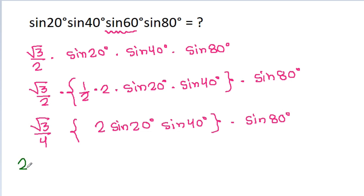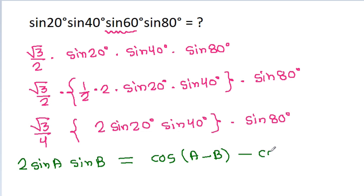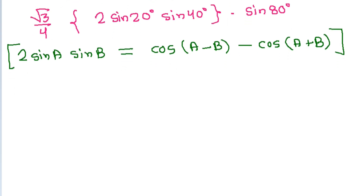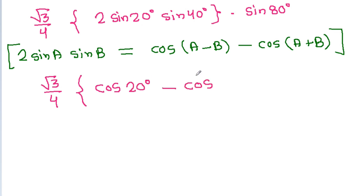We know that 2 sinA sinB = cos(A − B) − cos(A + B). Applying this, 2 sin 20° sin 40° becomes cos(40° − 20°) − cos(40° + 20°), which is cos 20° − cos 60°. So we get √3/4 times (cos 20° − cos 60°) × sin 80°.